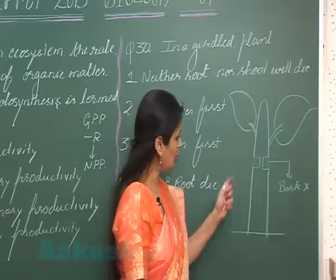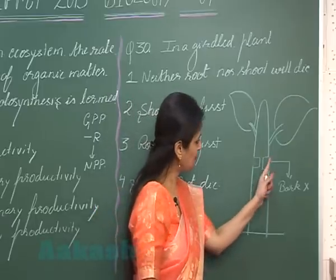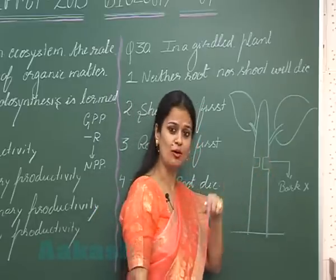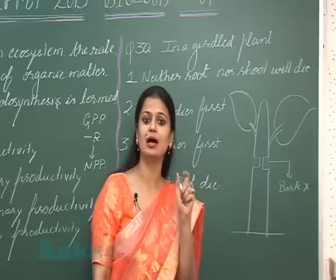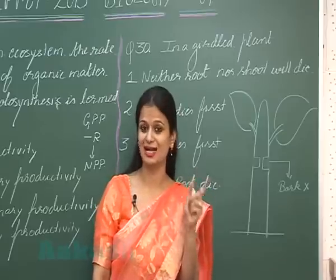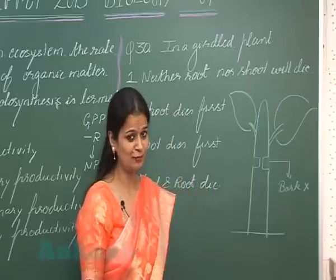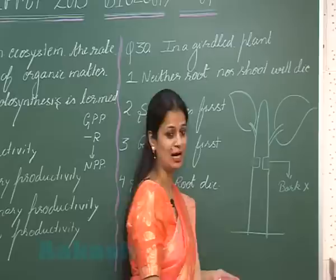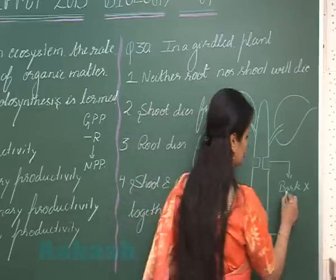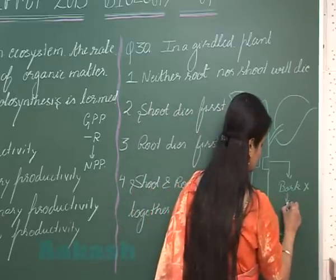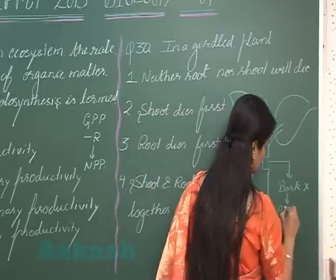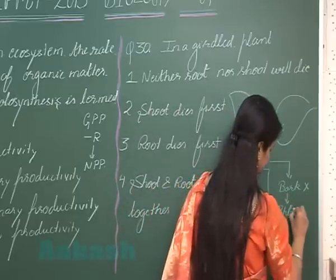The bark includes all tissue present outside the vascular cambium. When we remove the bark, it also results in the removal of the phloem.